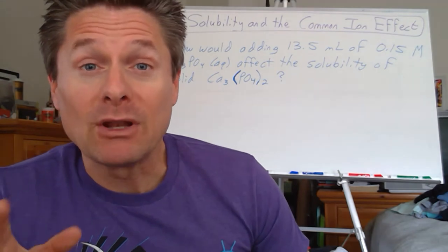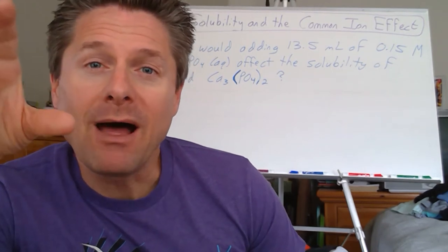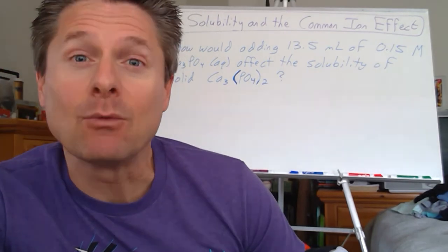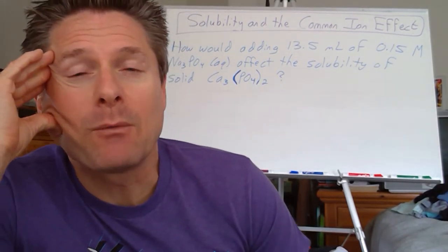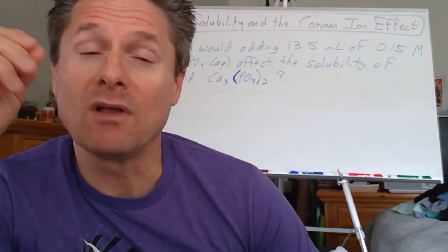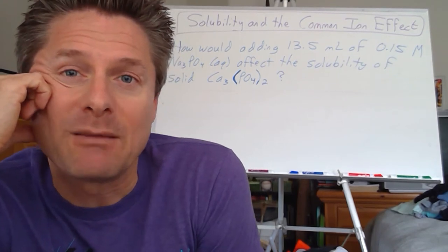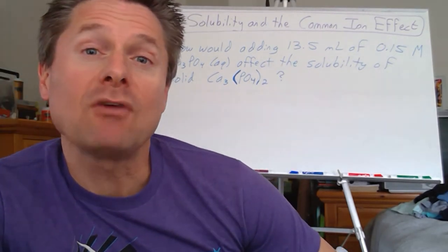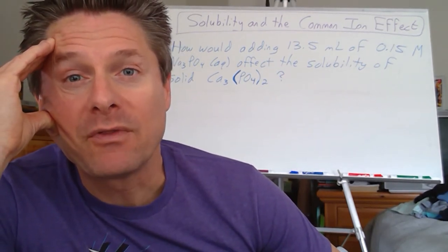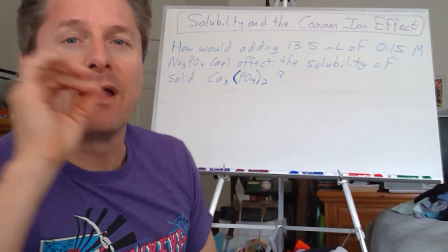I want to start with the common ion effect. We looked at that for acids and bases back in chapter 16 — if we add a common ion, that's going to shift the equilibrium away from that common ion, where a common ion is something already present in the equilibrium equation. We found with acids and bases it reduced their ionization, and we saw that adding a common ion to a solid in equilibrium with its solution would reduce its solubility.